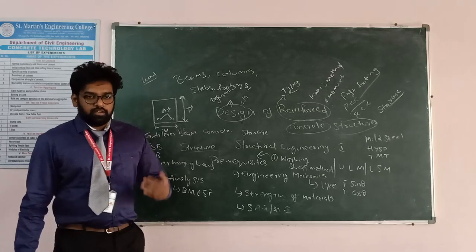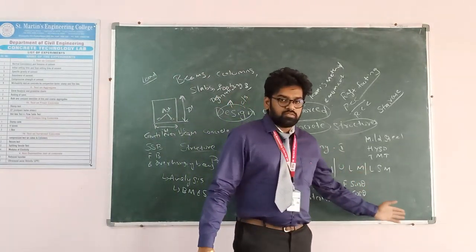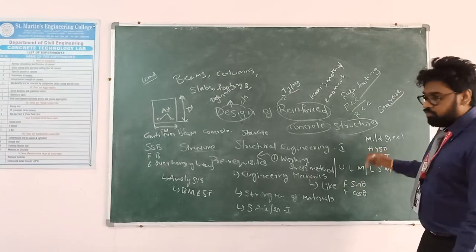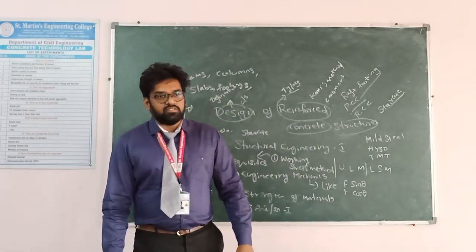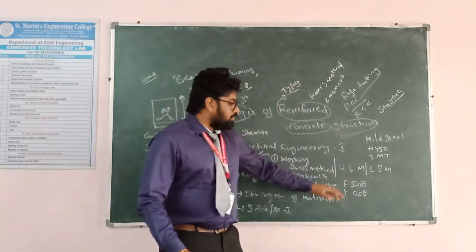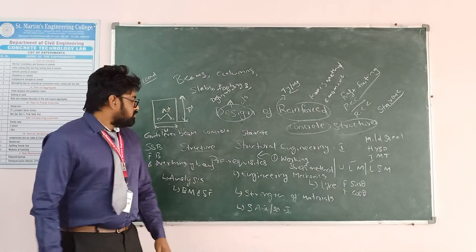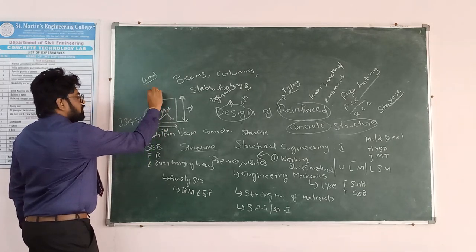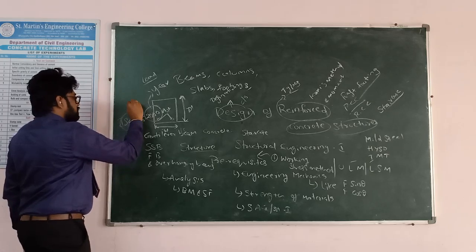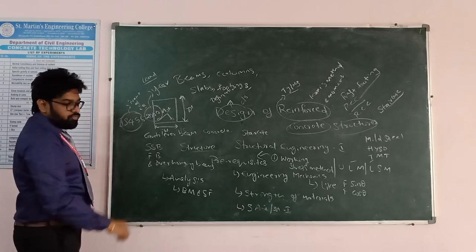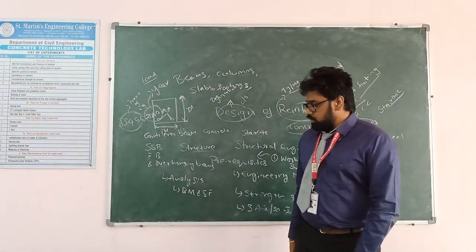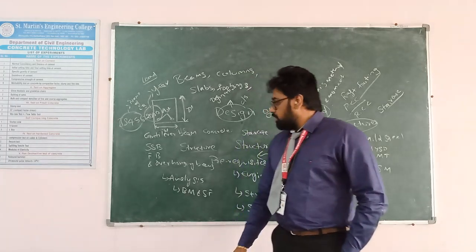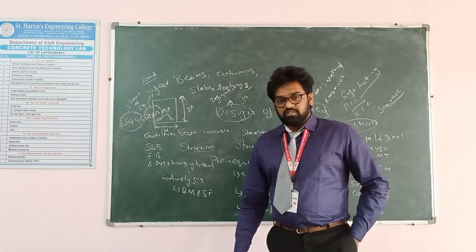These are the three methods used to design any structure. The working stress method is the oldest method, used in earlier times. The ultimate load method was used for only about 10 years before being revised. Now we use the limit state method, which has been in use from the 1960s to the present. The code book for this design is IS 456:2000, where 2000 is the year and IS 456 is the code number. The revised version is IS 456, revised in 2000. We follow the guidelines given in Indian Standards to design structures such as beams, columns, footings, and staircases.